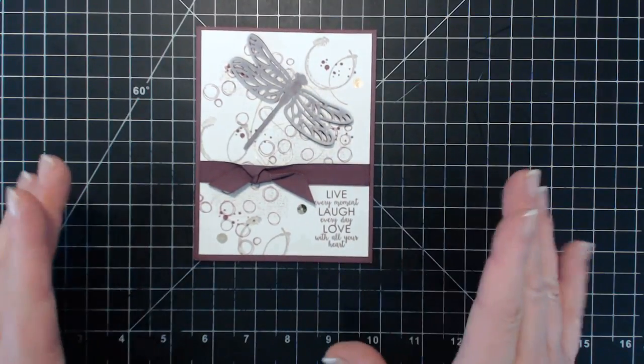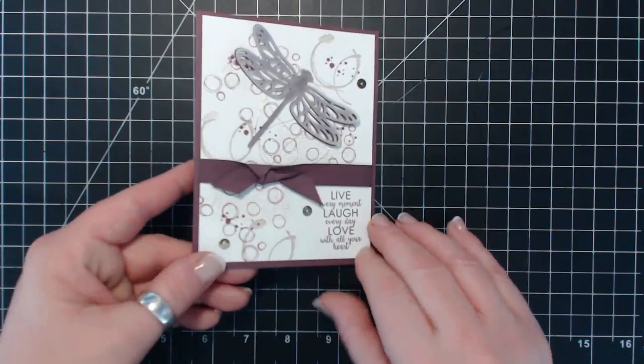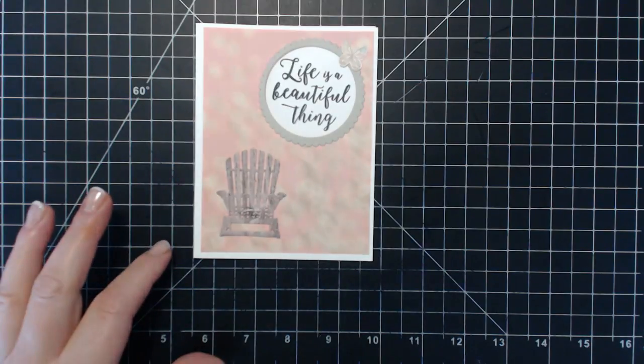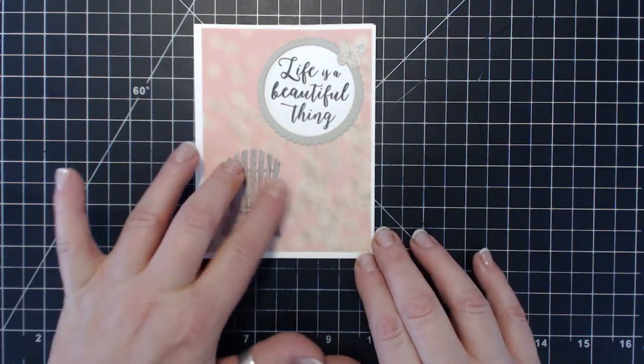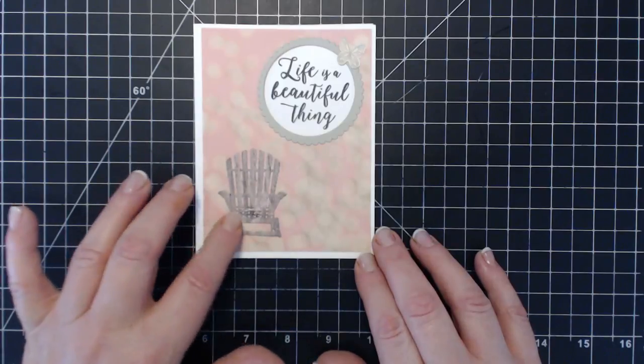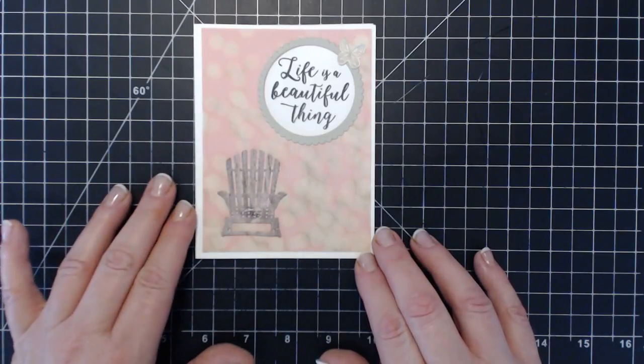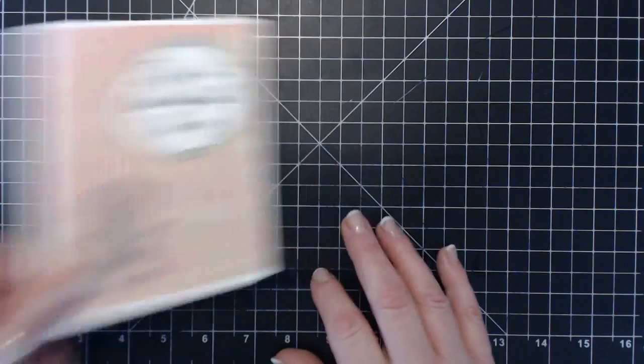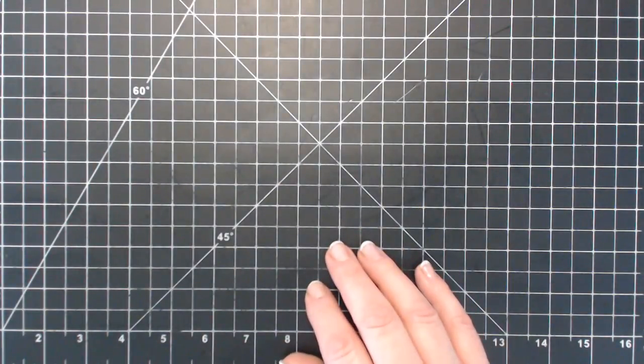This was a make-and-take I made at my team meeting using the Colorful Seasons thinlit dies. Really nice. It was designed by Sandra Donald, the first card that I shared.